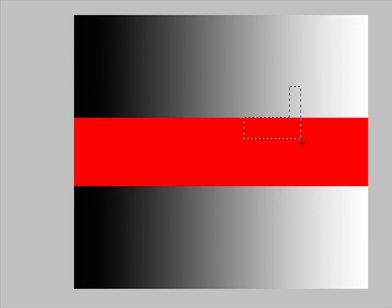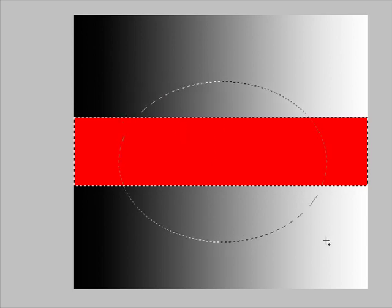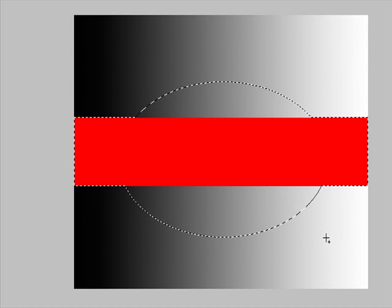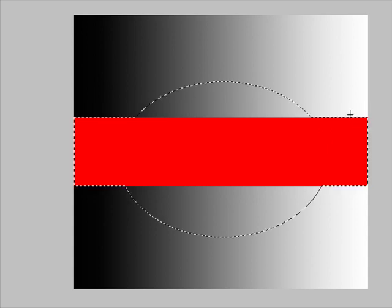Hold down Shift as you drag to constrain the marquee to a square or circle. Release the mouse button before you release Shift to keep the selection shape constrained. To drag a marquee from its center, hold down Alt in Windows or Option in macOS after you begin dragging. With the Single Row or Single Column Marquee Tool, click near the area you want to select and then drag the marquee to the exact location. If no marquee is visible, increase the magnification of your image view.